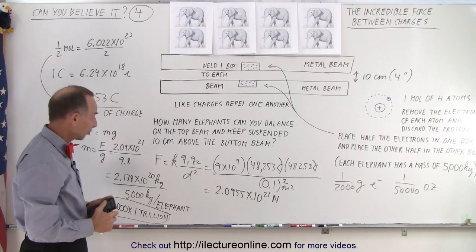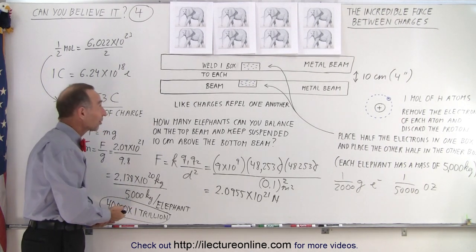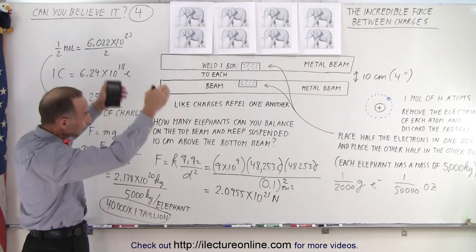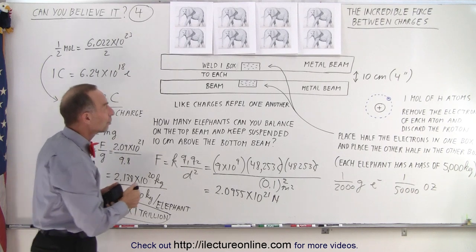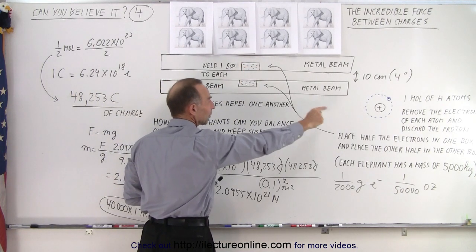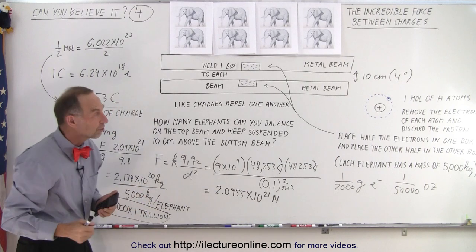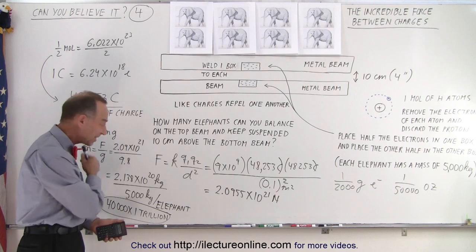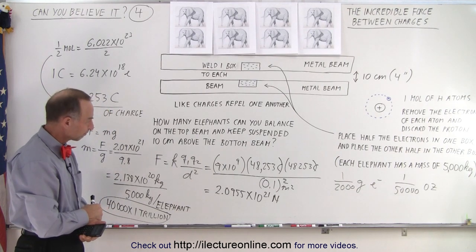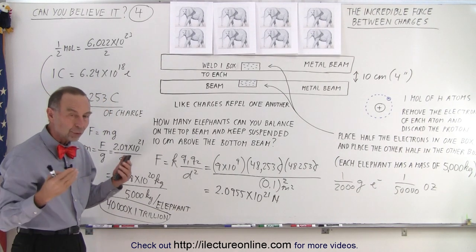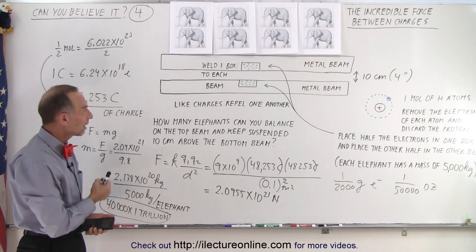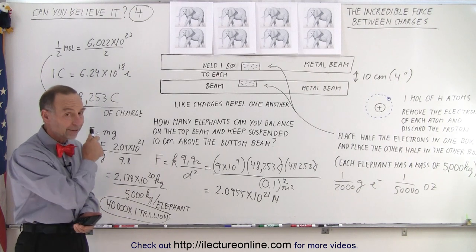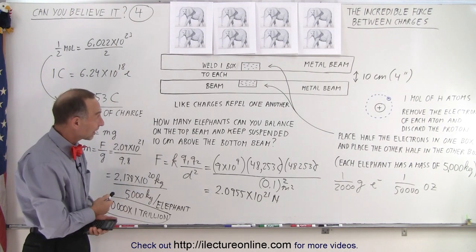And the top beam would be supported by the repulsive force between the electrons of 1 gram of hydrogen. Wow. Obviously that's an enormous number. Can you imagine 40,000 trillion elephants stacked up on top of the top beam, and the repulsive forces between those two little boxes filled with a half a mole of electrons each would support that enormous mass, that enormous weight of 40,000 trillion elephants? Wow. That's why this incredible force between electrical charges is just unbelievable. That is actually what's happening.